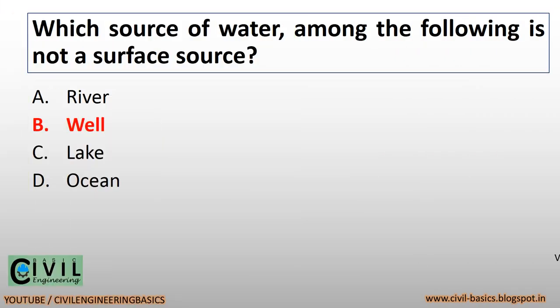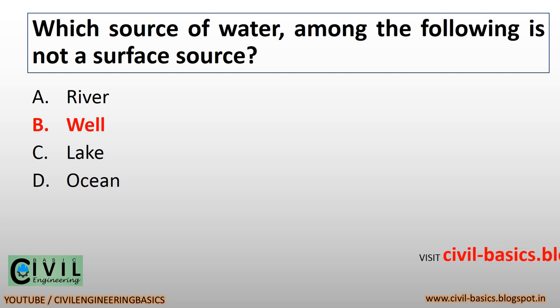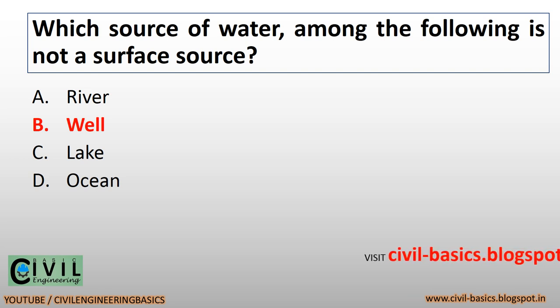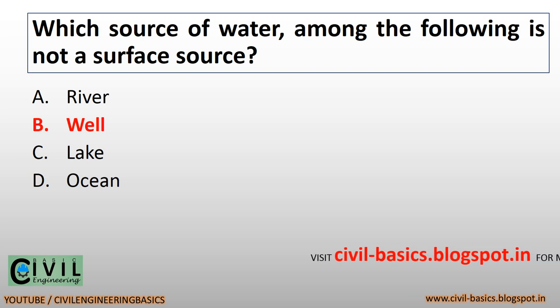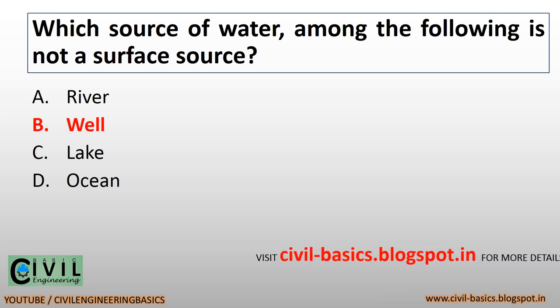Which source of water among the following is not a surface source? Well water is not a surface water. River water, lake water, and ocean water are surface water.